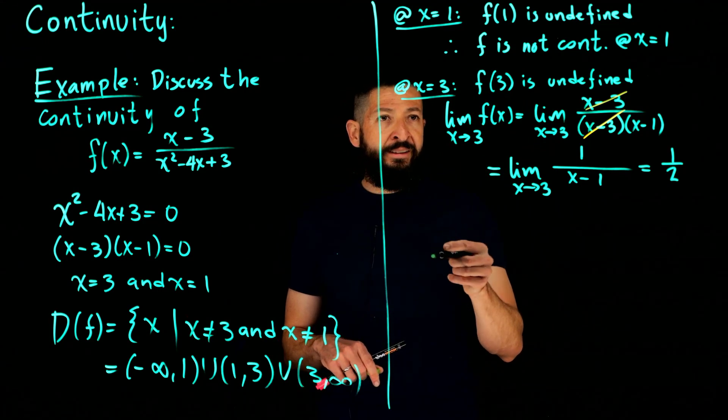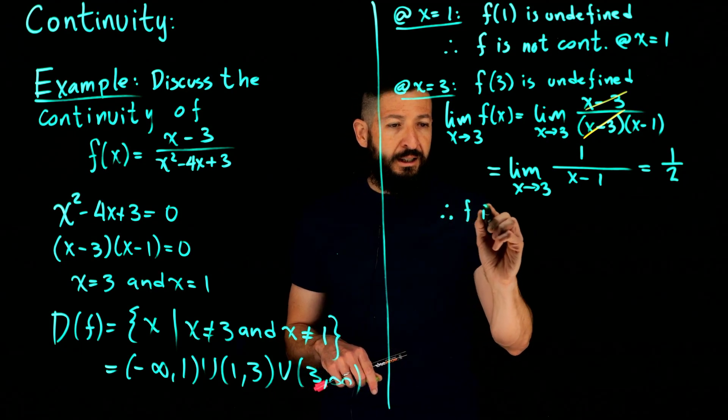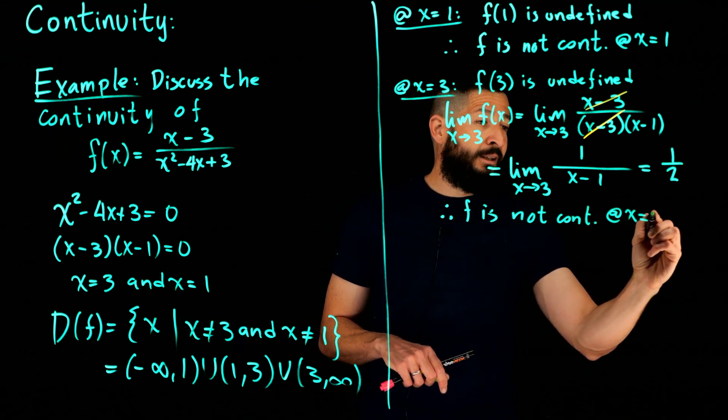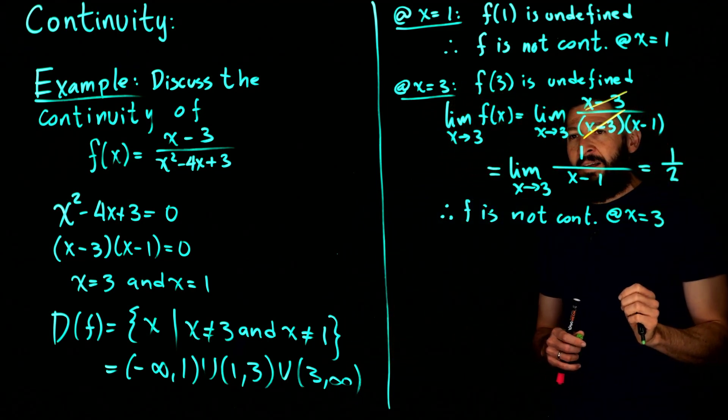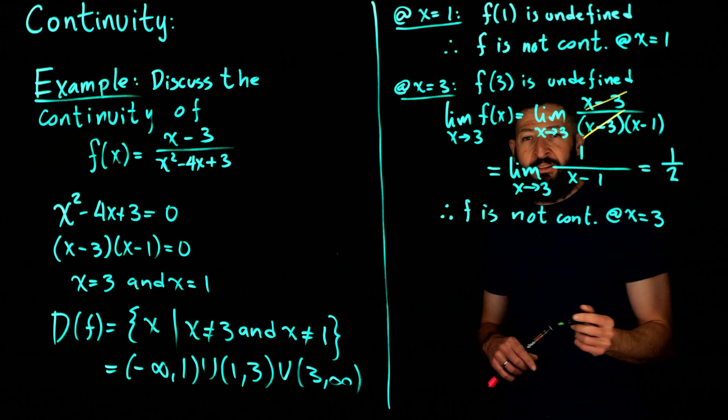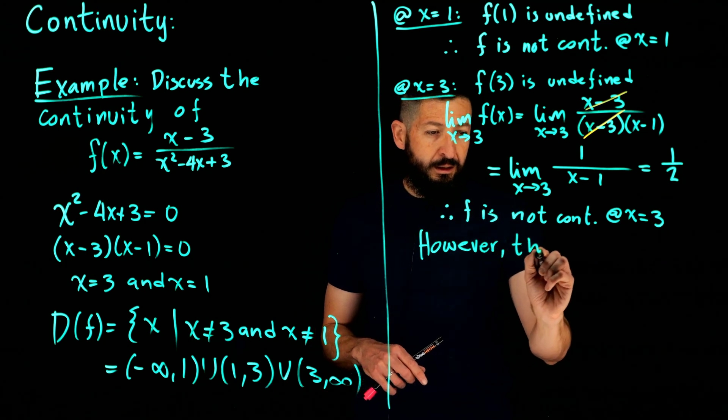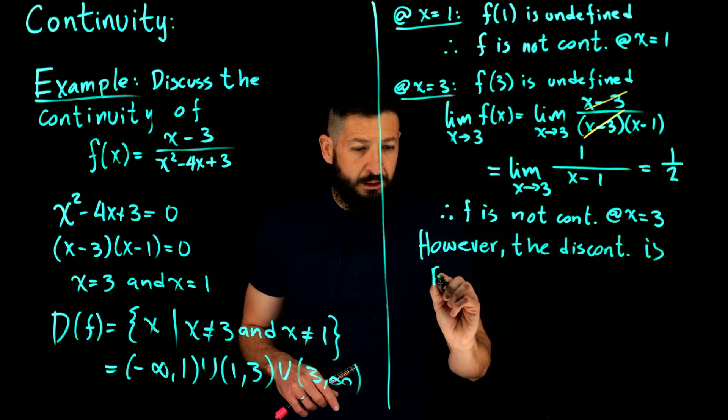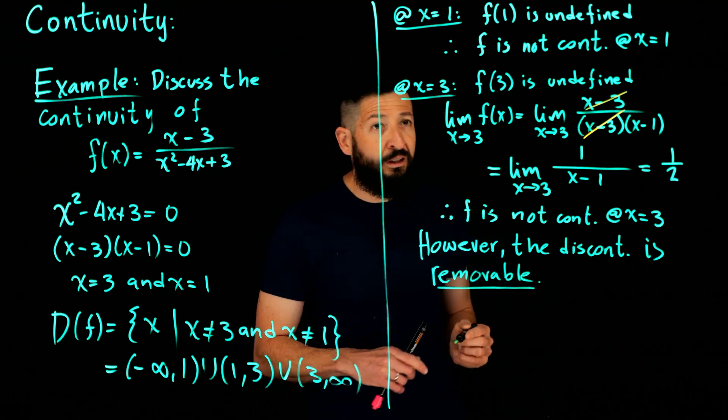And we're going to make a caveat here then that while f is not continuous at x equals 3, there's something nice that happens here. You have that the limit does exist. So what is that going to cause? This type of discontinuity is going to be called a removable discontinuity.